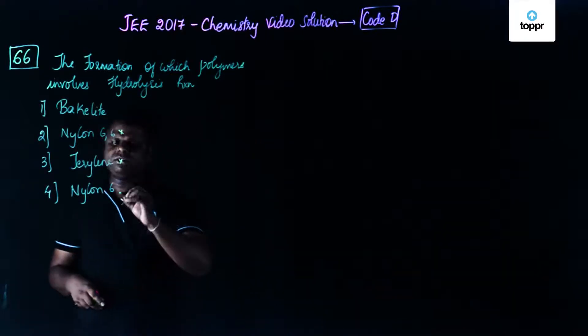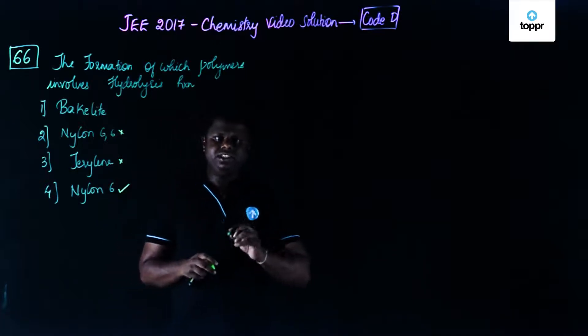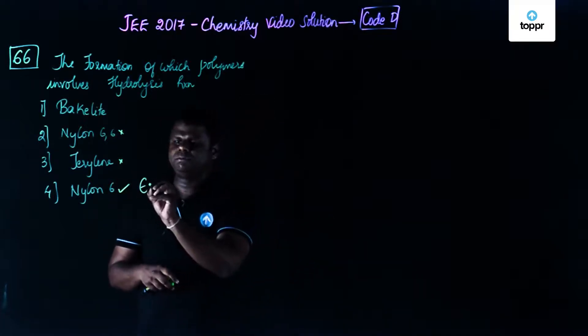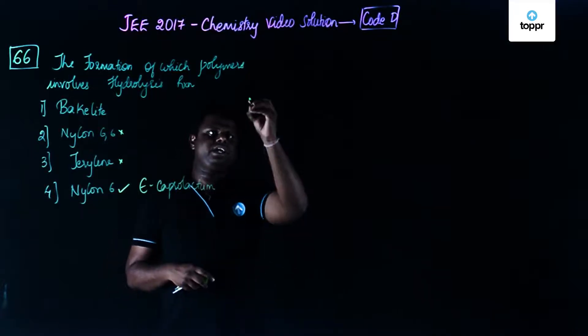So the only option which is left out is nylon 6. Now let's try to understand what exactly happens in nylon 6. So nylon 6, the monomer is epsilon caprolactam and what exactly happens?